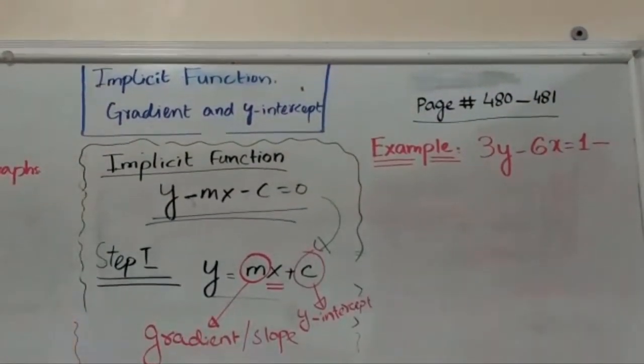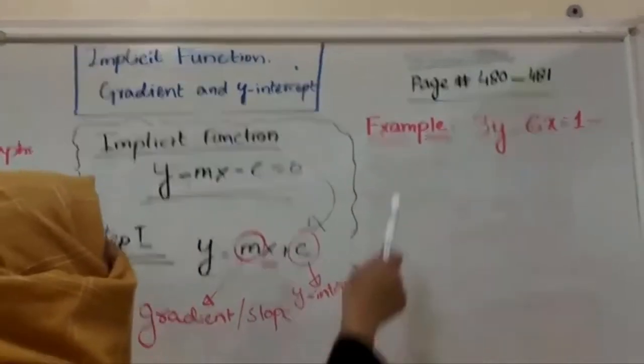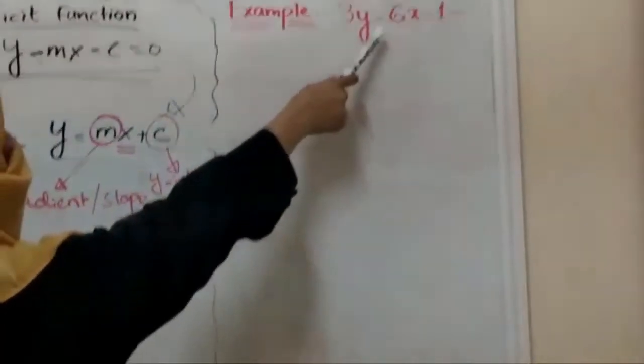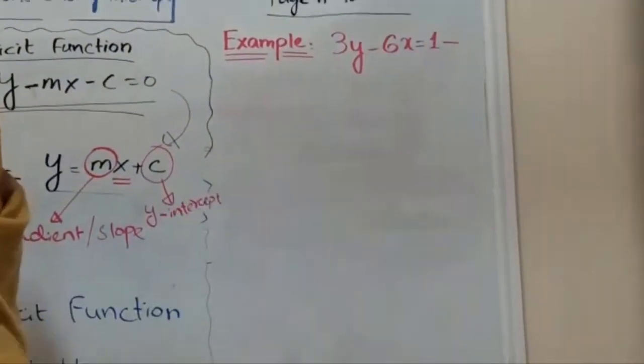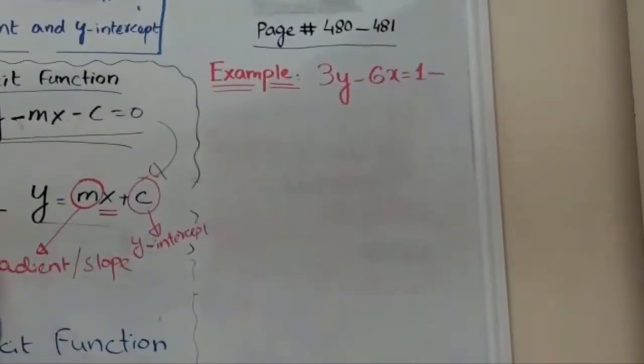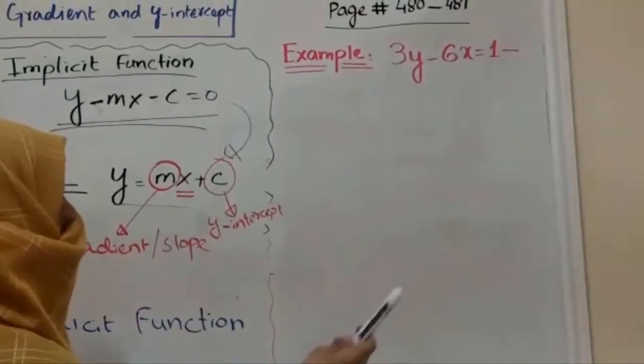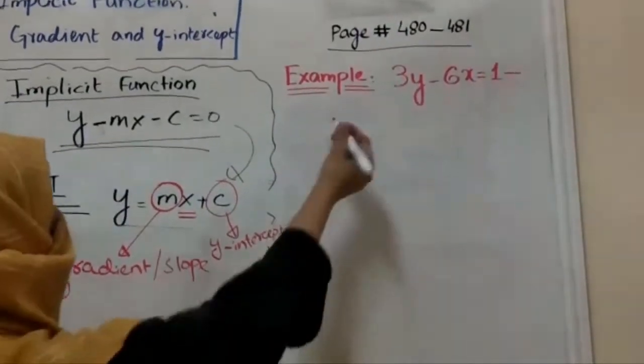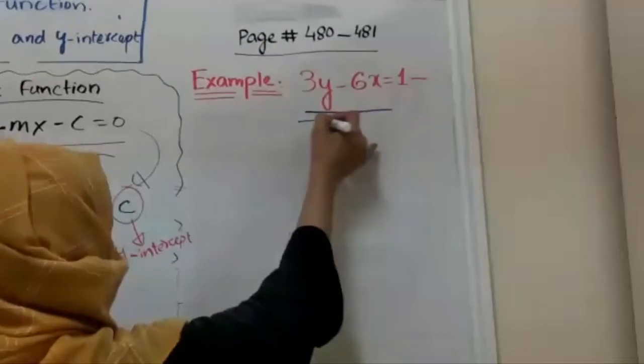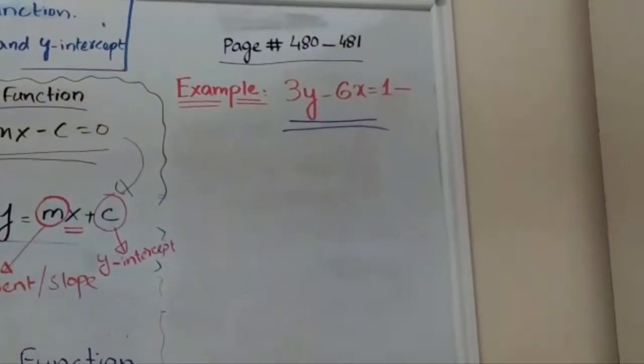Now I'm going to make all these rules for the example. Look at the example: we have 3y minus 6x equal to 1. So we have an implicit function over here, right? Now first, in first step, what we have to do: you have to find out explicit expression for this equation.